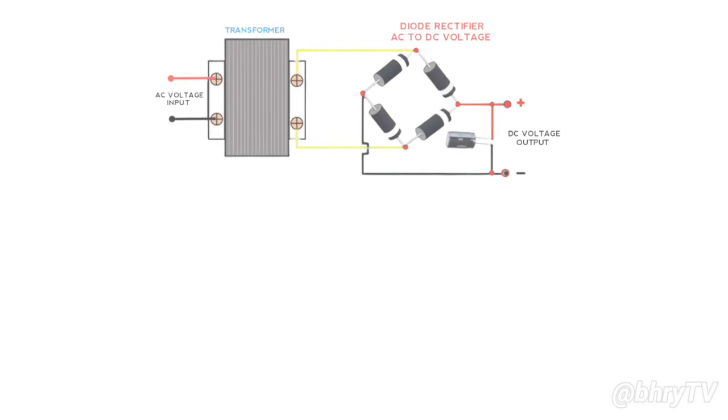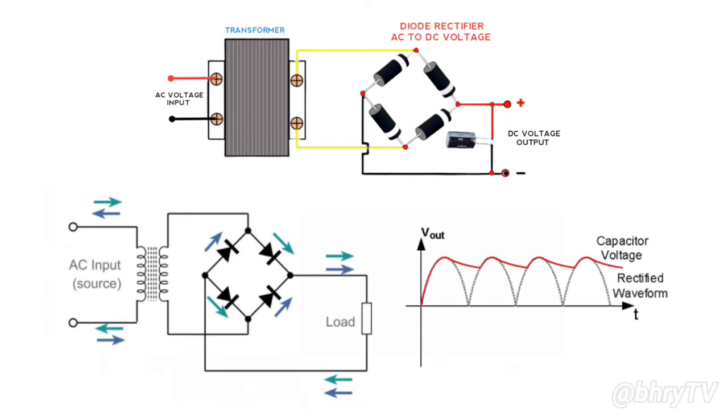A rectifier circuit converts the AC voltage to stable DC voltage with the help of diodes and filters. Diodes used in this circuit convert the input AC waveform into fluctuating DC waveform. This fluctuating DC waveform is then made stable using a capacitor as a filter.